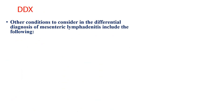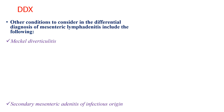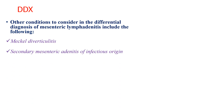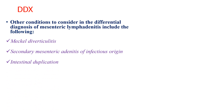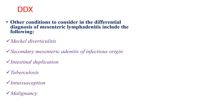Other conditions to consider in the differential diagnosis of mesenteric lymphadenitis include Meckel's diverticulitis, secondary mesenteric lymphadenitis of infectious origin, intestinal duplication, tuberculosis, intussusception, and malignancy.